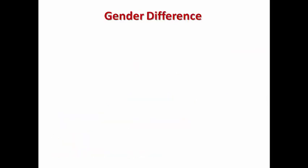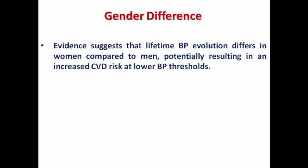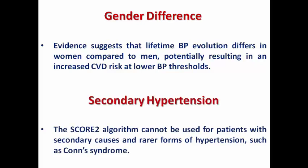Regarding gender differences in hypertension, there is clinical evidence that lifetime blood pressure evolution differs between genders — in females it potentially results in increased cardiovascular risk at lower blood pressure thresholds compared with men. Regarding secondary hypertension, the SCORE2 algorithm cannot be used, as in rarer forms of hypertension like Conn's syndrome or renal artery stenosis. The SCORE2 algorithm applies to primary hypertension.